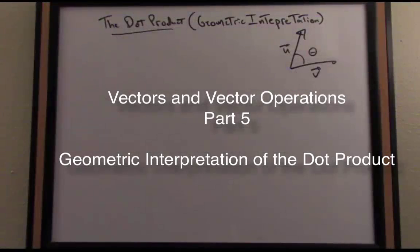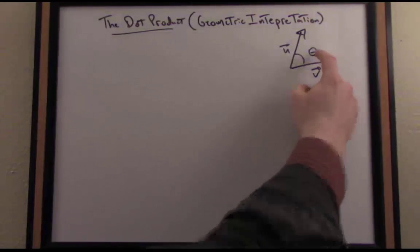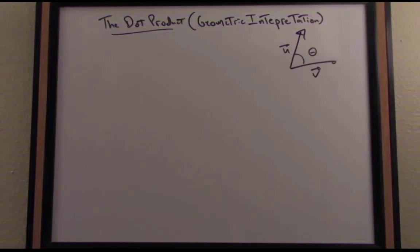So now let's talk about how we can better understand the dot product in a geometric sense. As you'll recall, the dot product involves two vectors. Here, let's call them u and v. I've labeled the angle, the smaller angle, between those two vectors as theta.